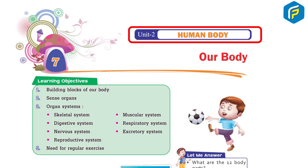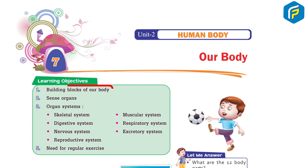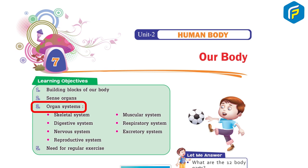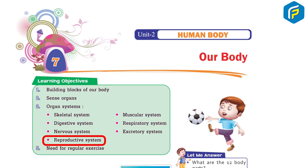Unit 2: Human Body, Chapter 7 - Our Body. Learning objectives: building blocks of our body, sense organs, and organ systems including skeletal system, muscular system, digestive system, respiratory system, nervous system, excretory system, and reproductive system. We will also cover the need for regular exercise.